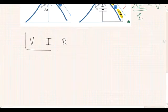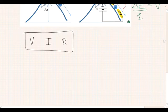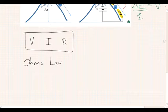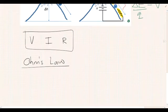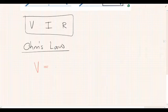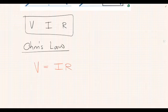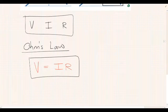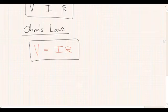Now it turns out that all three of these variables are linked very nicely together in a formula that you're going to have to be very familiar with, and that formula is called Ohm's law. So Ohm's law states that the voltage is equal to the current times the resistance: V equals IR.